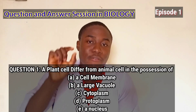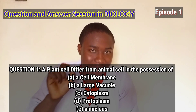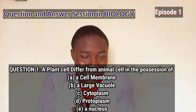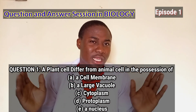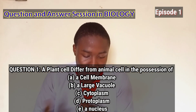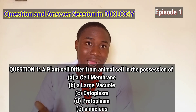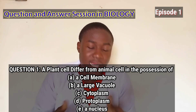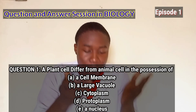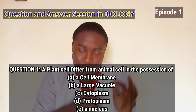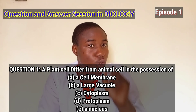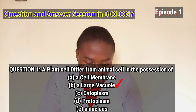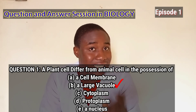The first question is: a plant cell differs from an animal cell in the possession of — A, a cell membrane; B, a large vacuole; C, a cytoplasm; D, protoplasm; and E, nucleus. The answer to this question is option B, which is a large vacuole.